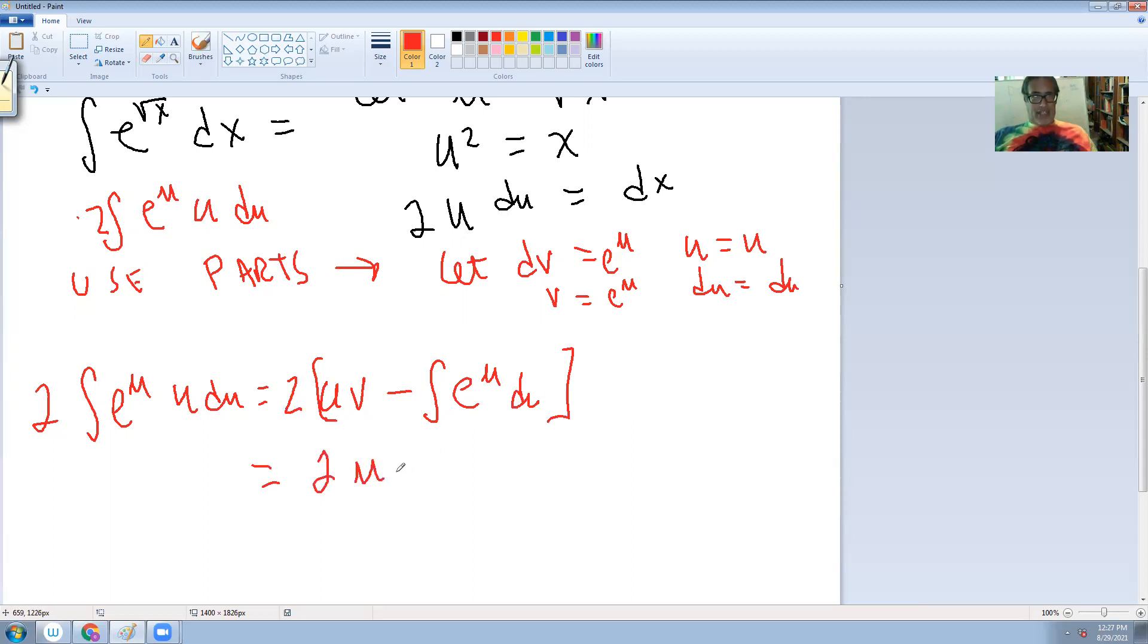So it's now 2u, or v is e to the u. I was being silly there. And the integral of e to the u is e to the u, plus c.